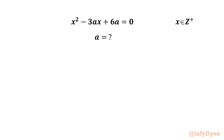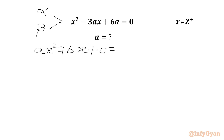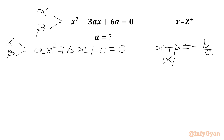Let's get started by considering two roots of this quadratic equation, alpha and beta. Using Vieta's method, for ax² + bx + c = 0 having roots alpha and beta, we know that sum of roots alpha + beta is -b/a, and product of roots alpha·beta is equal to c/a.